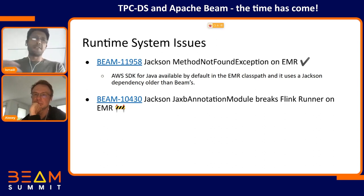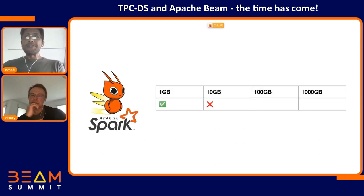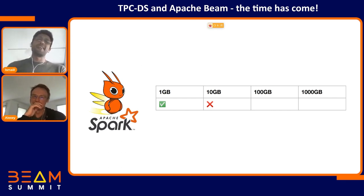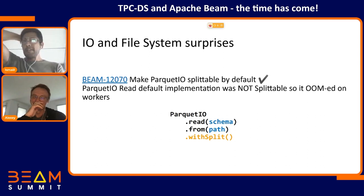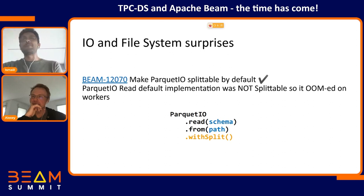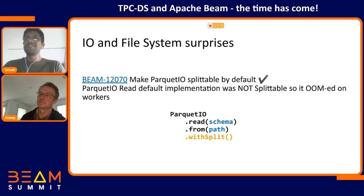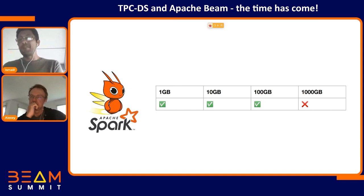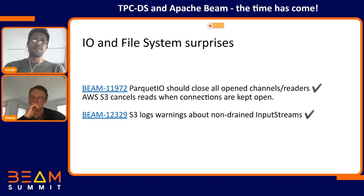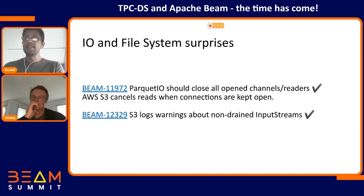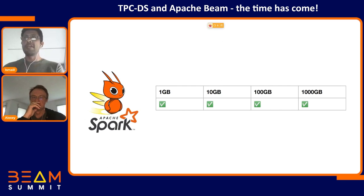After fixing the Jackson issue, I tried to run with the 10 gigabyte dataset and found another issue: ParquetIO by default was not reading partitions correctly — it was not parallelizing splits safely unless you explicitly set the split count. This is a terrible default that we have now fixed so it uses parallelism by default. With correct parallelized reads we could move to the next step of 100 gigabytes, where we hit another issue: Amazon S3 was cancelling reads because connections were open for too long without renewal or release. We also had warnings about not fully draining the input stream. We fixed those and finally could run everything at all sizes.